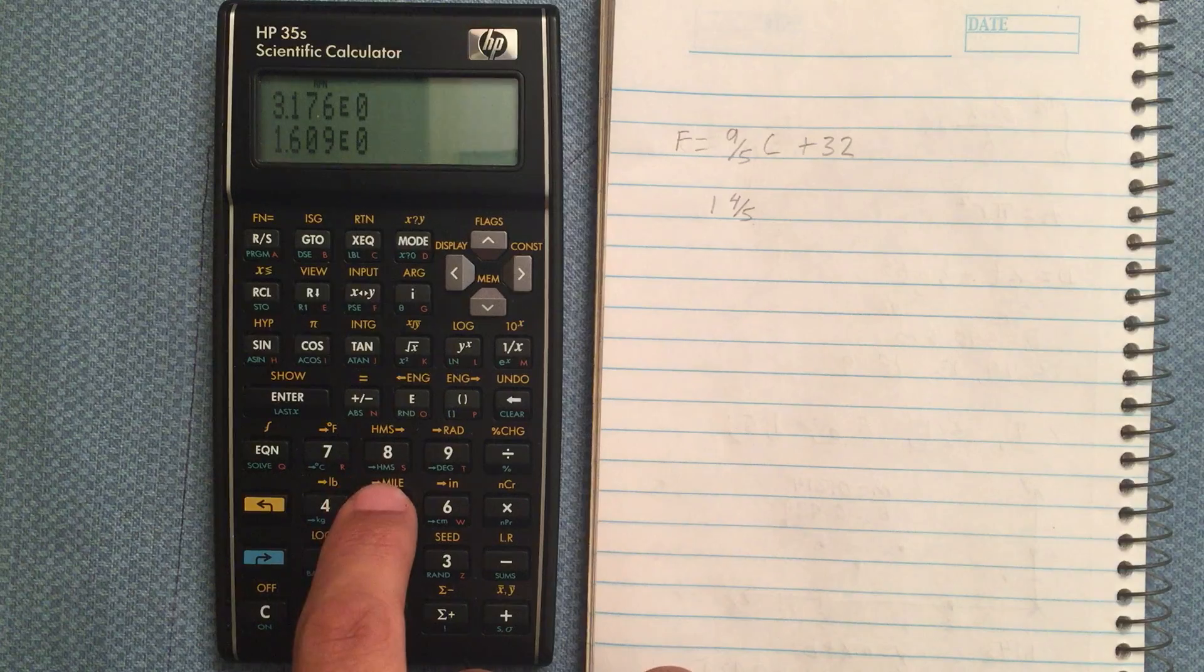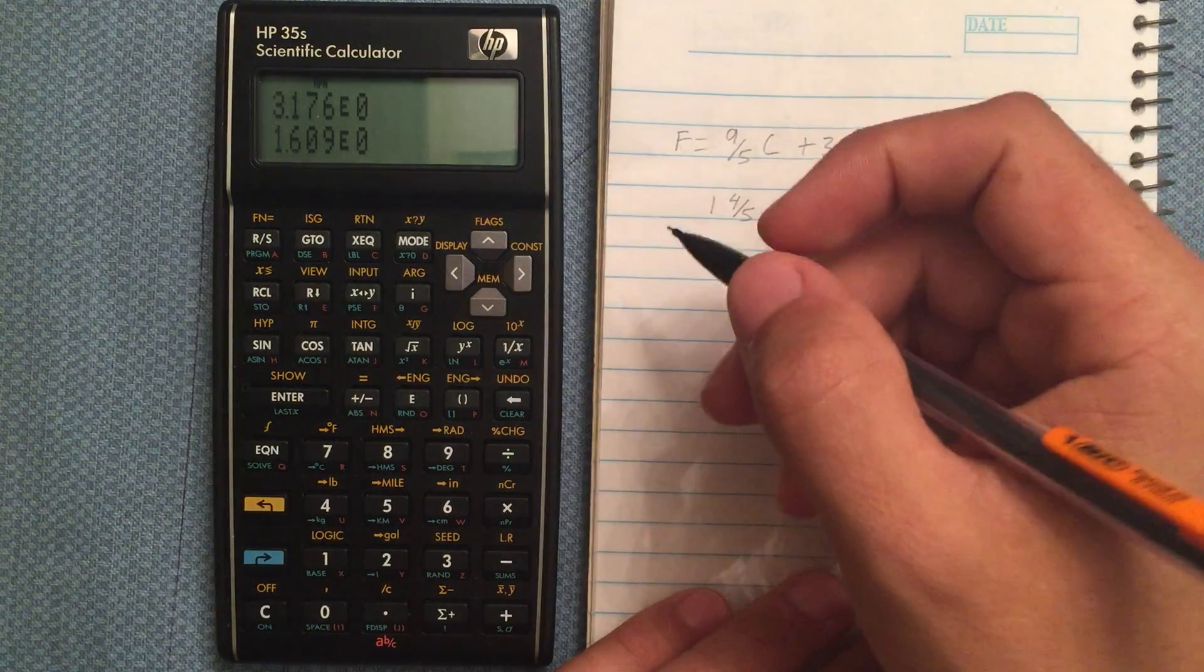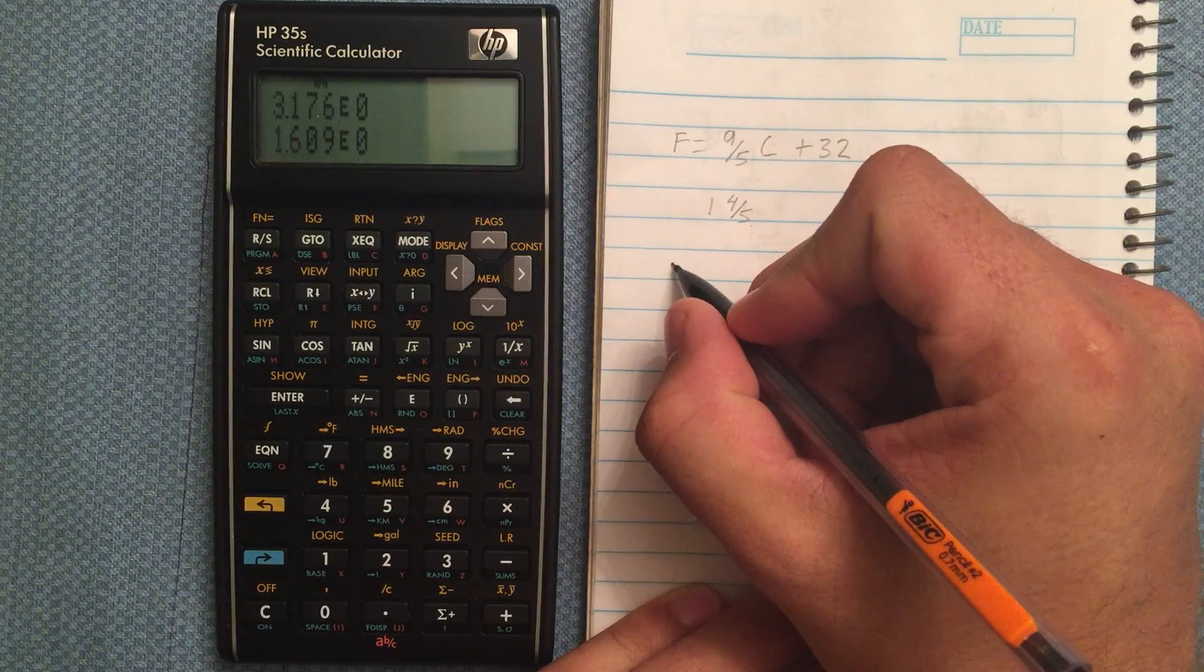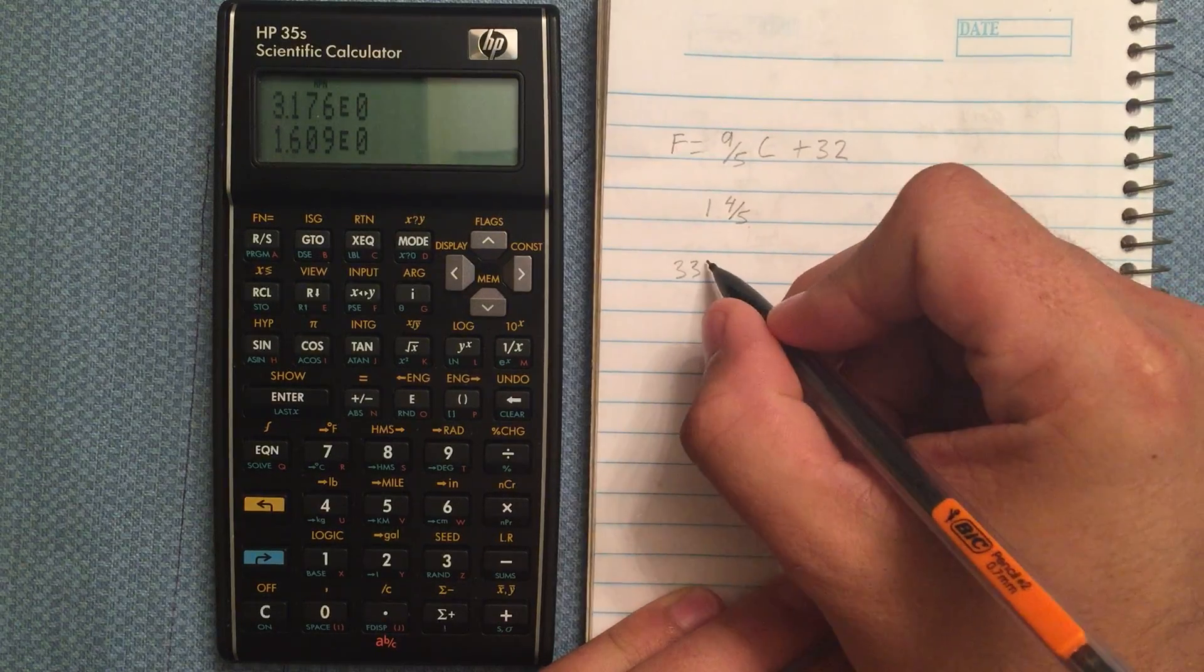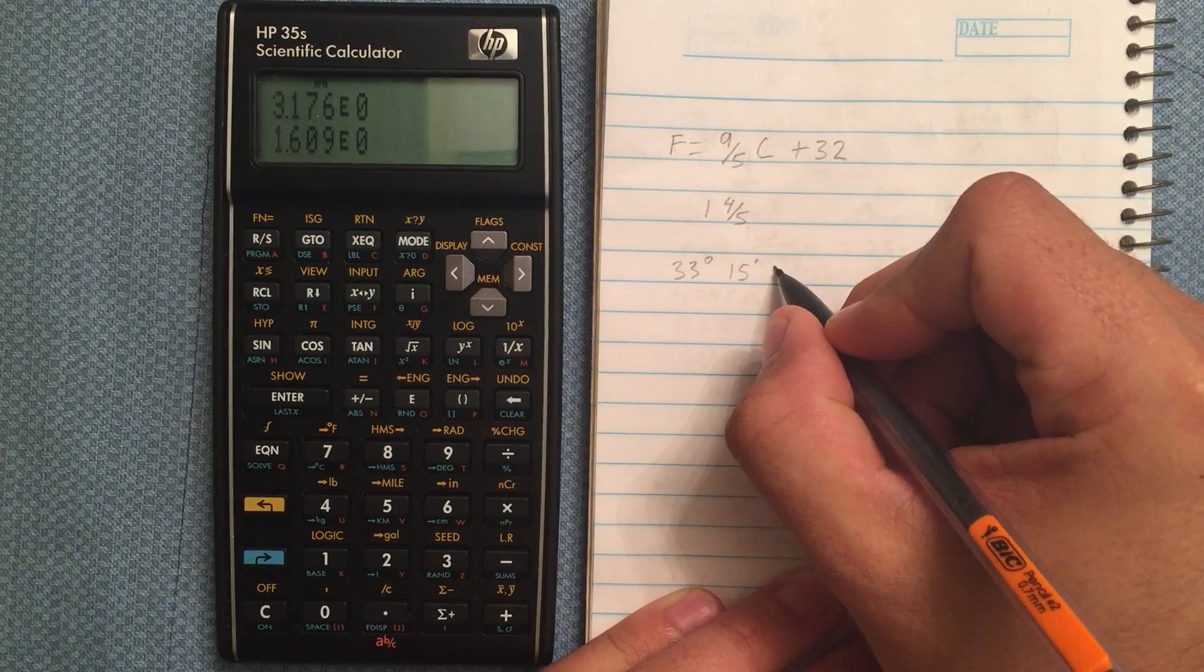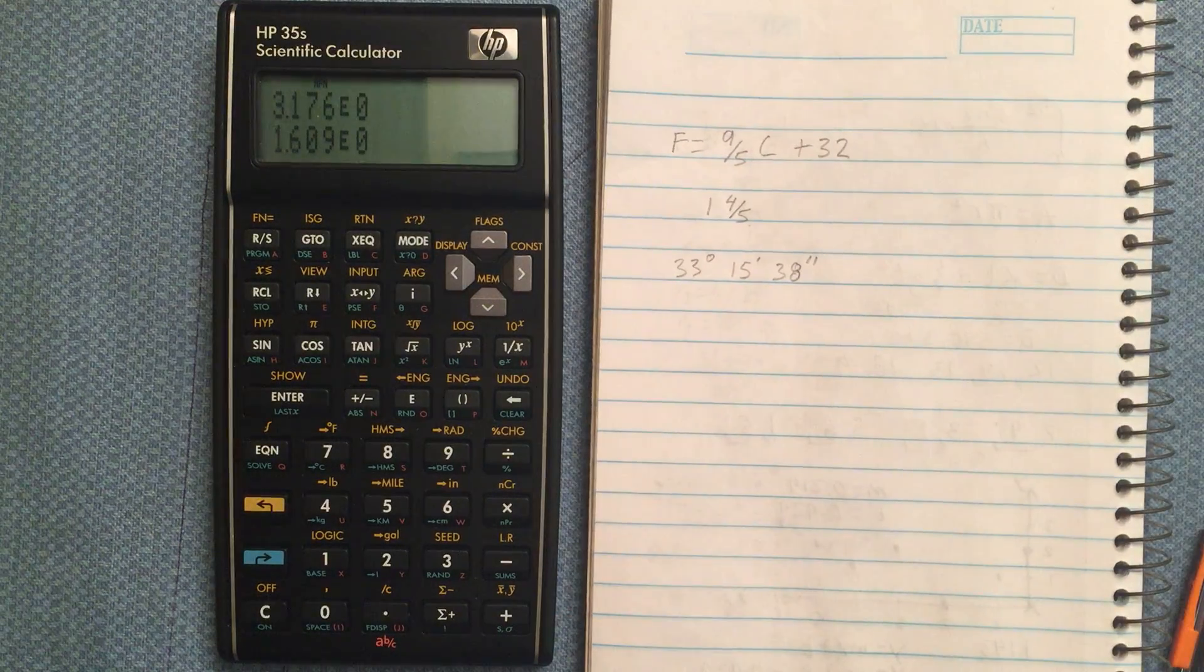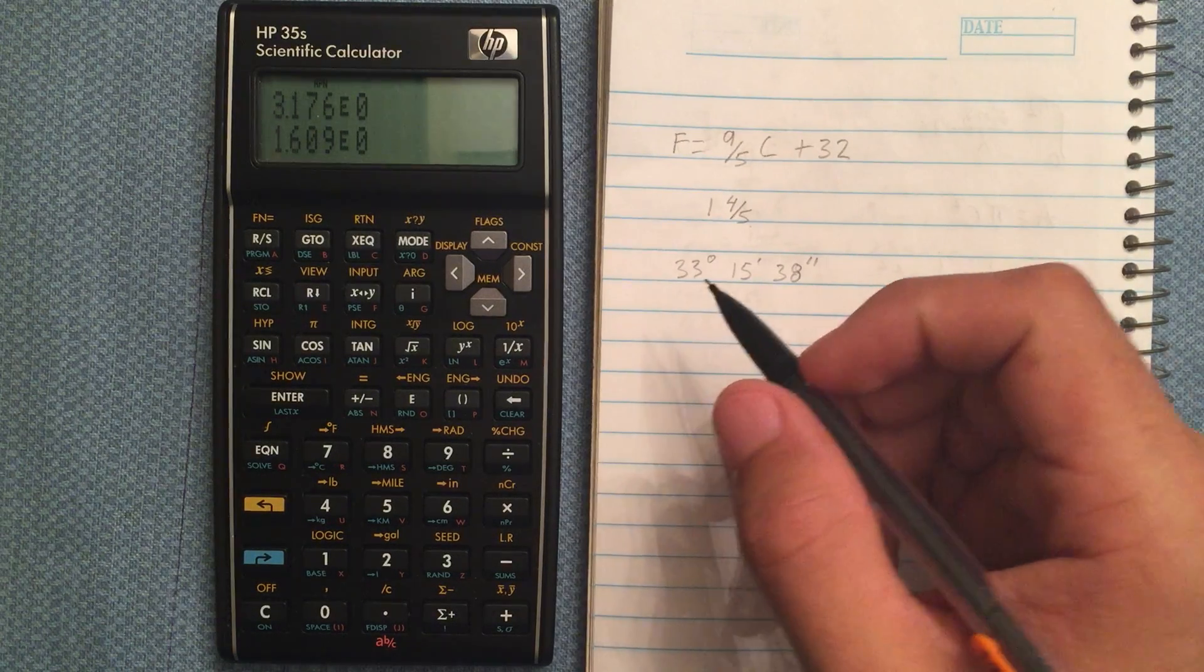Probably the trickiest one is this hours, minutes, seconds. So, there will be times, for example, when I'm converting a latitude, longitude. And let's say it's, oh, I don't know, 35 degrees, 15 minutes, 38 seconds. Something like that. And I want to convert that into a decimal form. Maybe I'm using that in calculations.